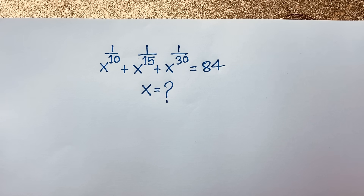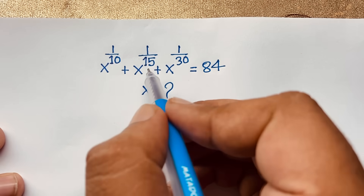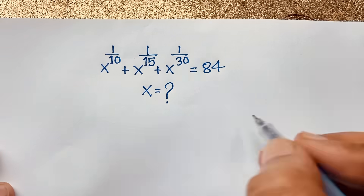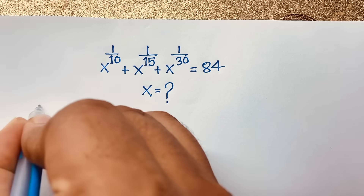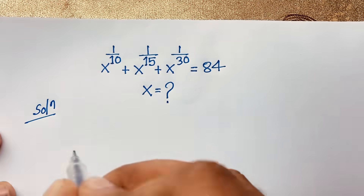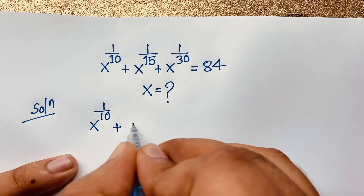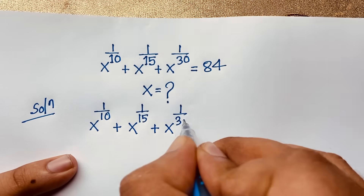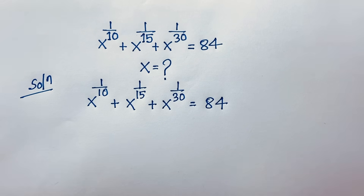Hello everyone, welcome to Russia's classroom. Today we have a nice math problem to solve. The question is: x to the power 1 over 10, plus x to the power 1 over 15, plus x to the power 1 over 30, is equal to 84. We need to find the value of x in this Math Olympiad question.